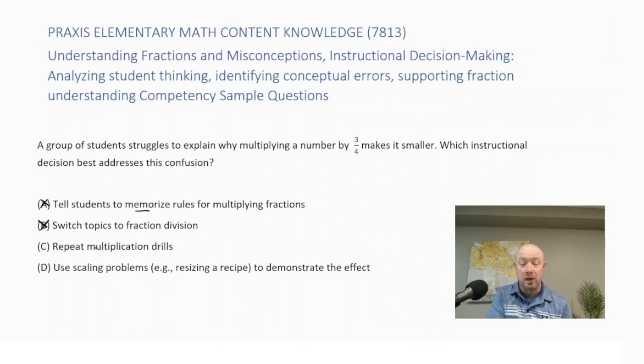Choice C, repeat multiplication drills, isn't necessarily going to help them understand why the concept of multiplying by a fraction make it smaller. So I'm going to eliminate choice C. So the correct answer here was to use scaling problems, e.g. resizing a recipe to demonstrate the effect. So you're using a real-life problem to help students understand the effects of multiplying by three-fourths.